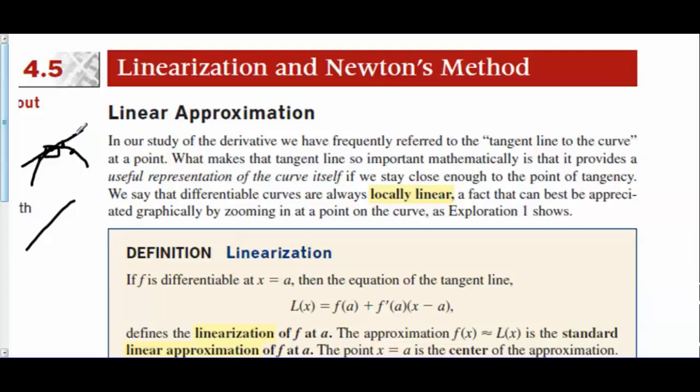For example, if we use this y value to estimate the curve's y value, that's starting to get far apart. Now the curve could curve back up and the two y values could eventually be the same thing again, but that's only by coincidence. So as long as we are relatively close to the point of tangency, the line can estimate the curve.